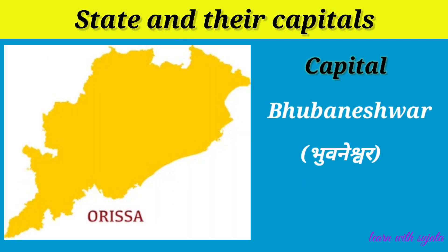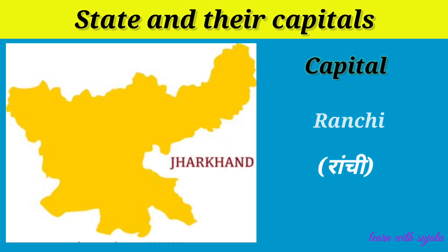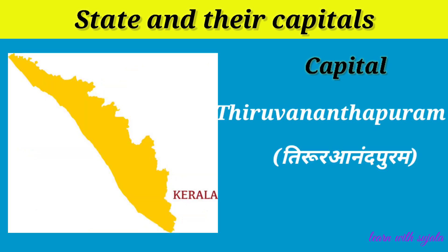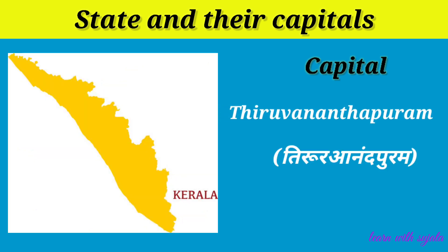Odisha. The capital of Odisha is Bhubaneswar. Jharkhand. The capital of Jharkhand is Ranchi. Kerala. The capital of Kerala is Thiruvananthapuram.